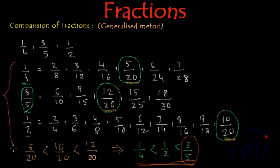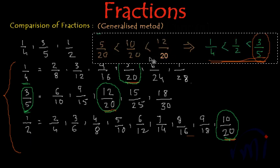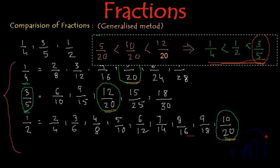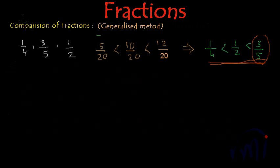We have written the equivalent fractions until we got the same number as their denominators, and then compared. This is a slightly longer method. We have a shorter method where we actually find the LCM and then reach these equivalent fractions directly. So now we are going to find the equivalent fractions of 1/4, 3/5, and 1/2 by finding the LCM. For that we have to find the LCM of their denominators: 4, 5, and 2.